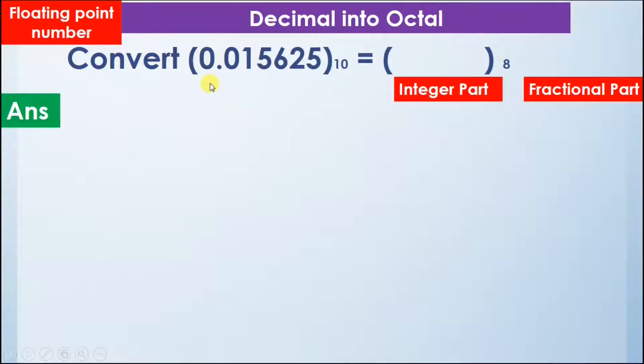So here in this example we are given with the number 0.015625 in decimal and we have to convert it into octal. So let's see how do we solve it.